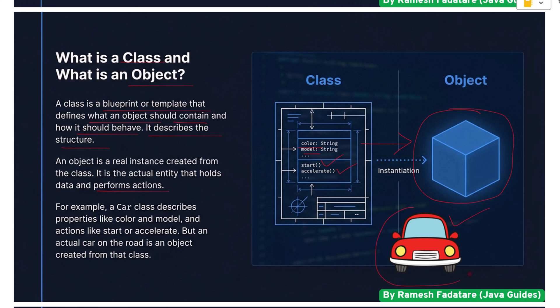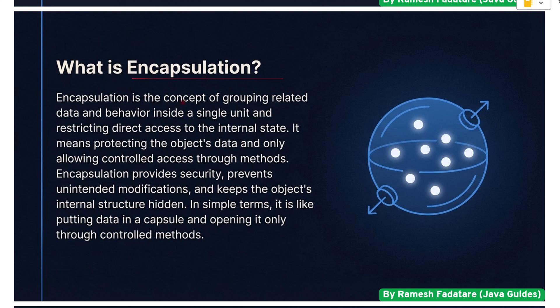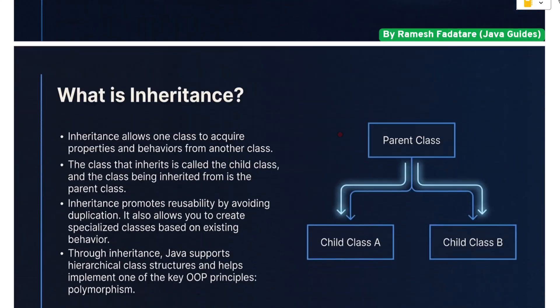What is encapsulation? Encapsulation is the concept of grouping related data and behavior inside a single unit and restricting direct access to the internal state. It means protecting the object's data and only allowing controlled access through methods. Encapsulation provides security, prevents unintended modifications, and keeps the object's internal structure hidden. In simple terms, it is like putting data in a capsule and opening it only through controlled methods.